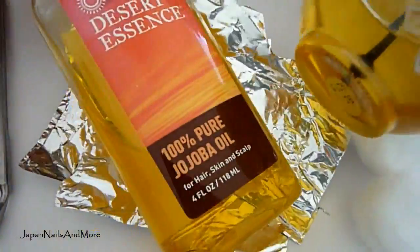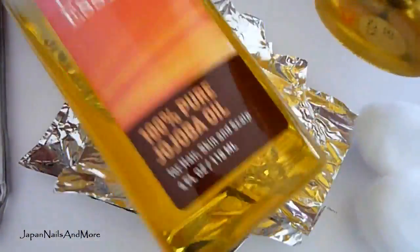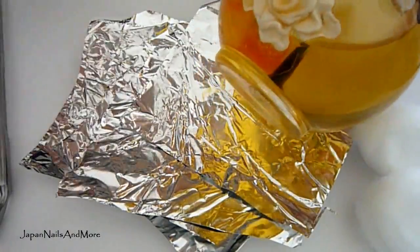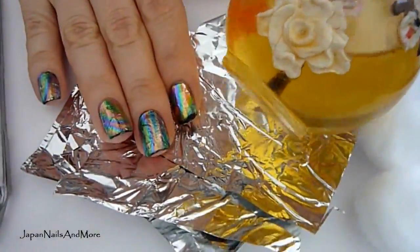After I remove all of this, you're also going to need some cuticle oil. You can use any kind of oil that you have, jojoba oil, whatever mix of oil that you like onto your nails just to replenish the moisture back into your nails. So let's get started.